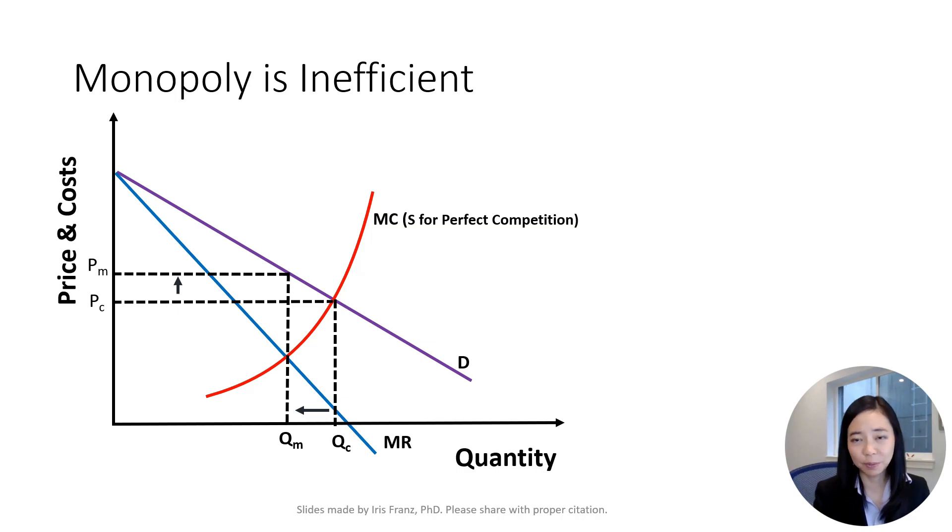Notice that with monopoly, the price PM is higher than the competitive price PC and the quantity QM is lower than the competitive quantity QC. Therefore, we have a deadweight loss.